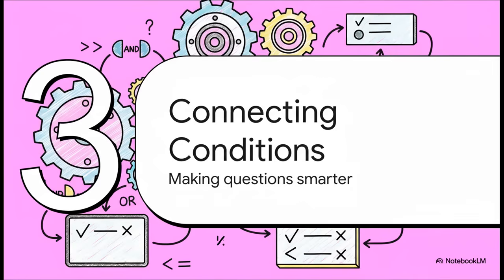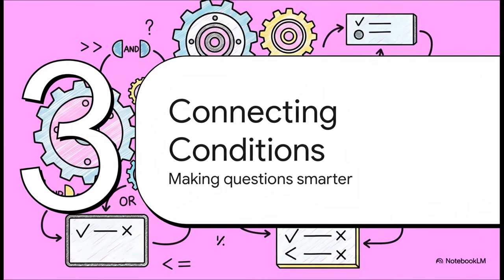So our computer can now answer one simple question at a time. That's a fantastic start, but life's usually more complicated than that, right? What if a decision depends on more than just one thing? We need a way to chain these simple questions together to ask something a bit more intelligent. And to do that, we have our next toolkit, the logical operators.